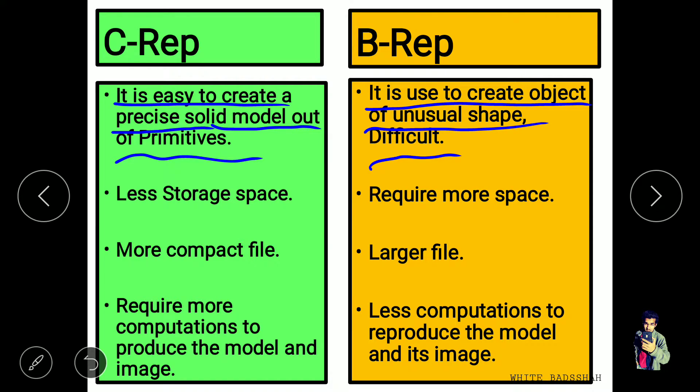In CSG, it requires less storage space because the database contains only the configuration parameters of the primitives like cylinder, cone, and the boolean operations. But in B-Rep, it requires more space because the model contains explicit definitions of the model boundaries like faces, edges, loops, points, and vertices — every kind of data is contained in B-Rep, so it requires more space.